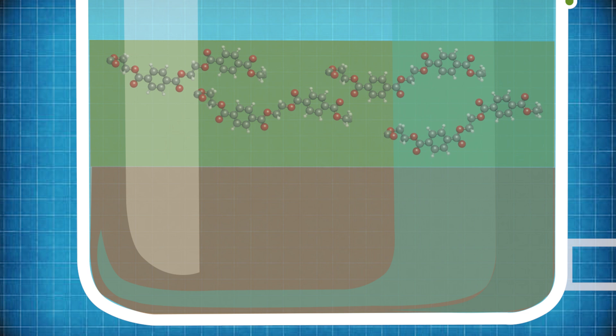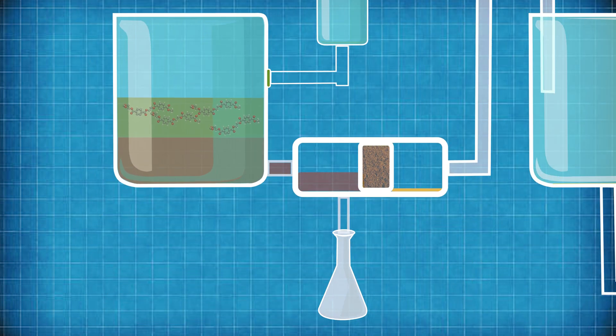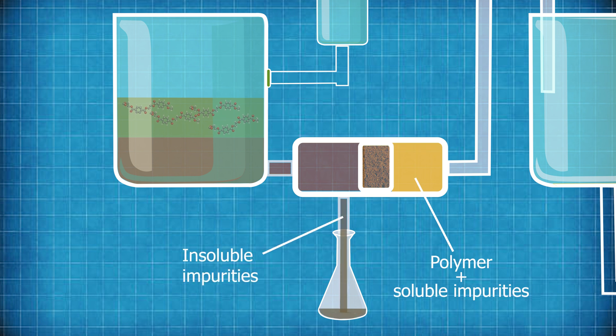Any insoluble impurities are physically filtered out leaving behind a solution containing just the polymer chains and the soluble impurities. The insoluble impurities can themselves then be sorted and recycled if they contain valuable materials.